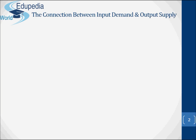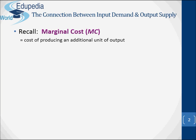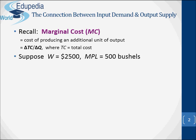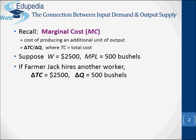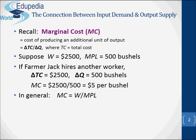This slide establishes the relationship between the marginal cost and the marginal product. The marginal cost MC is the cost of producing an additional unit of output. It equals Delta TC divided by Delta Q, where TC is the total cost. Suppose that the wage equals $2,500 and that the MPL equals 500 bushels. If farmer Jack hires another worker, Delta TC will be $2,500 and Delta Q will equal 500 bushels, so the marginal cost will be $5 per unit. In general, the marginal cost equals the wage divided by the MPL.